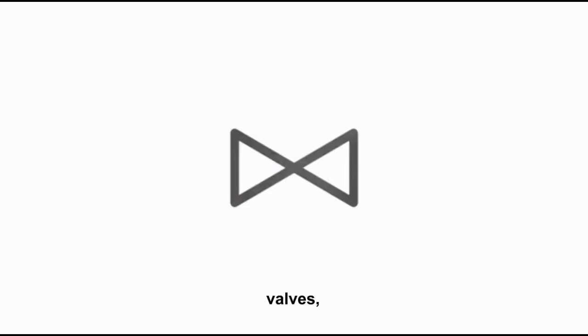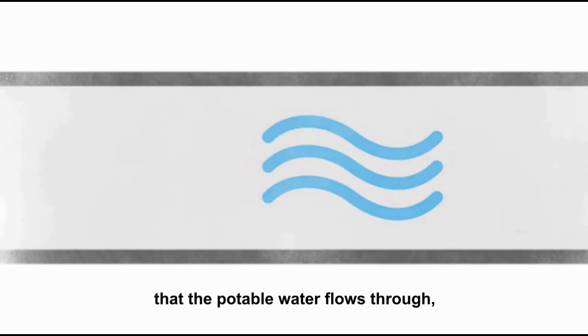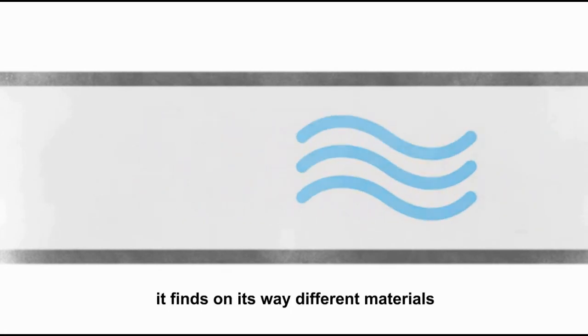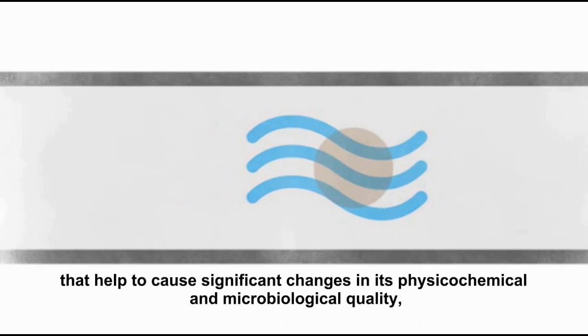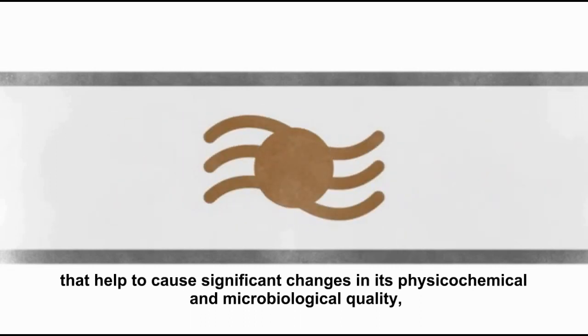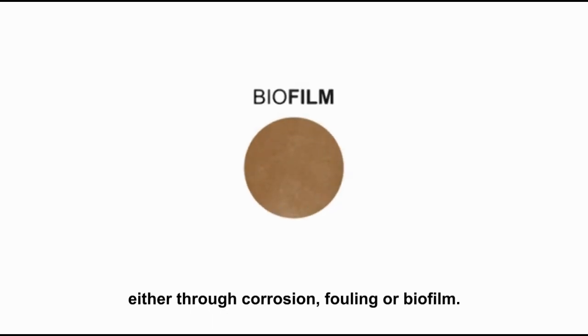These are made up of pipelines, distribution tanks, valves, pumps, meters, and more. Depending on the design conception of the aqueduct, while the potable water flows through them, it encounters different materials that cause significant changes in their physicochemical and microbiological quality, either through corrosion or fouling and biofilm.